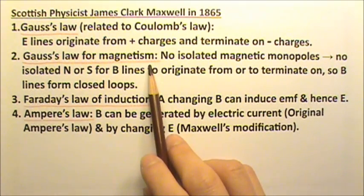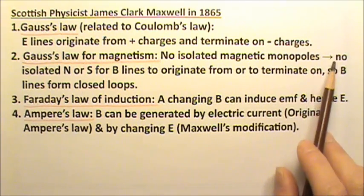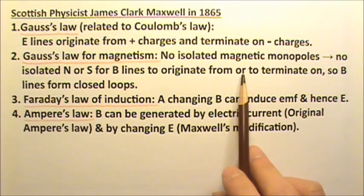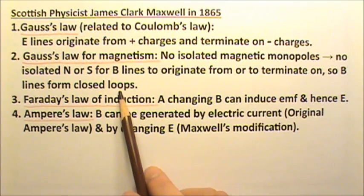Gauss's law for magnetism. Because there are no isolated magnetic monopoles, no isolated north or south poles for magnetic field lines to originate from or to terminate on, magnetic field lines always form closed loops.